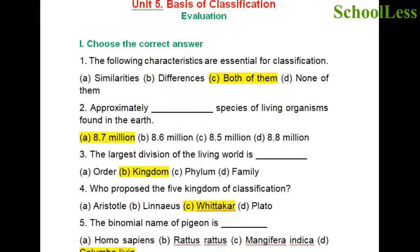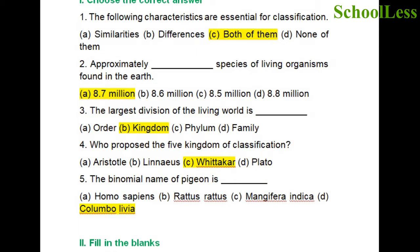Question 4: Who proposed the five kingdoms of classification? A. Aristotle, B. Linnaeus, C. Whittaker, D. Plato. It is Whittaker who proposed the five kingdoms of classification. Therefore, choice C is the right answer.